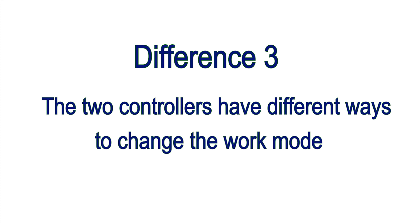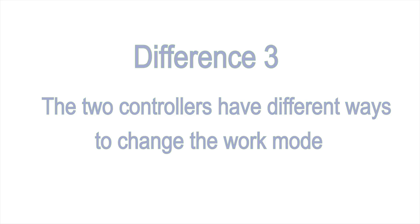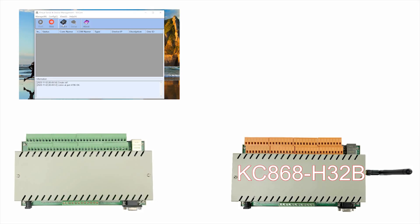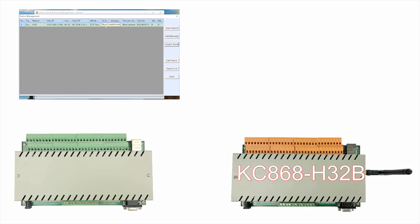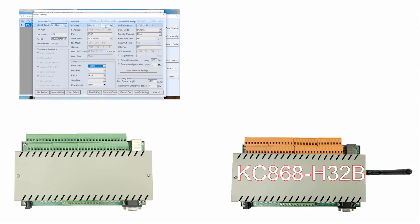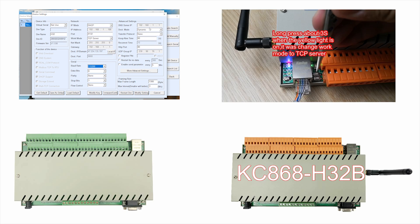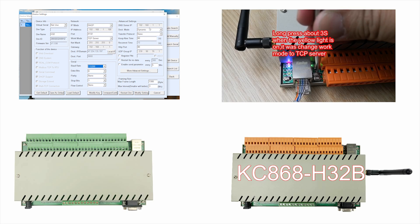Difference 3: the two controllers have different ways to change the work mode. The H32L needs software to change the work mode, but the H32B just requires clicking a button to change the work mode.